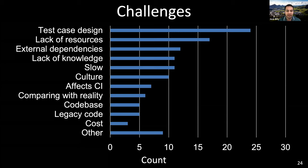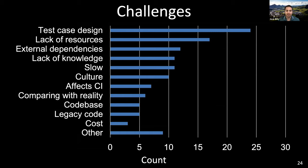The next challenge is external dependencies — research software often depends on external hardware, software, compilers, etc., that makes testing difficult. Because research software developers are not trained software engineers, there is always a lack of knowledge. Many respondents found their testing process very slow but always had a deadline. There is a cultural difference between the research and software engineering communities. A unique challenge is comparing results with reality — testing ocean models, climate control, or nuclear weapons. Because of lack of knowledge and resources, they often have a poor code base that is hard to test, and much of their code is legacy code.